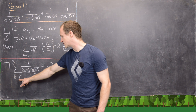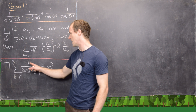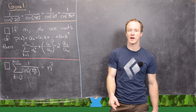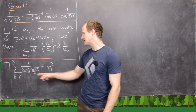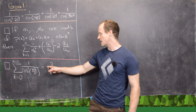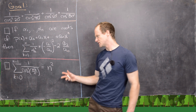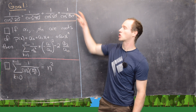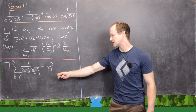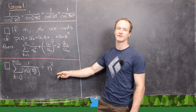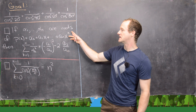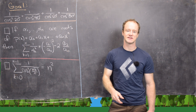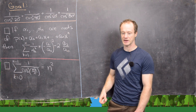Our second tool says that if you sum from k equals 0 to n of 1 over cosine squared evaluated at pi times k over n, you get n squared. This is a really nice general result in itself, and our goal is a special case of this. In fact, the first tool will be used directly to prove this second one.